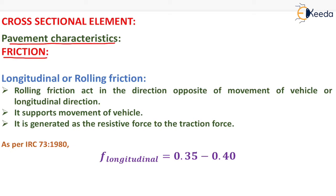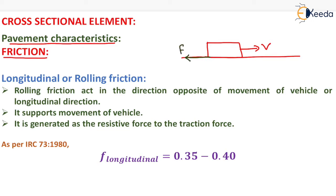Now what do you mean by friction? Any force which opposes the movement of a vehicle is known as friction. Suppose that a vehicle is moving along a particular pavement with a velocity v, so to oppose this movement, friction will be generated — known as frictional force — and its magnitude is generally equal to f times N, where f is the coefficient of friction and N is the normal reaction. The weight of the body, that is mg, will also be acting here.